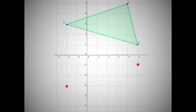And lastly, for C, which is at 4, 5, we multiply the y-coordinate by negative 1, we get 4, negative 5, which is right here.